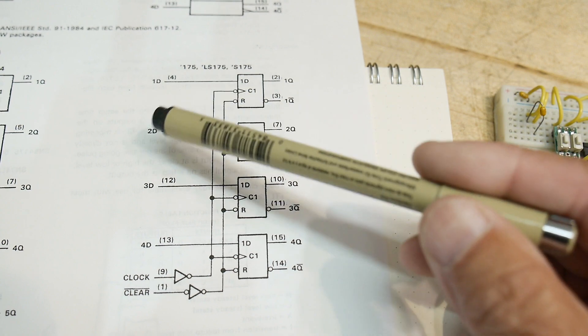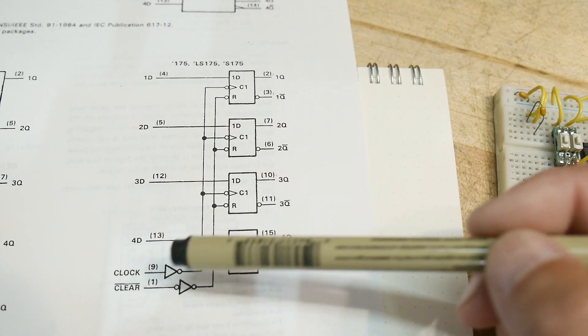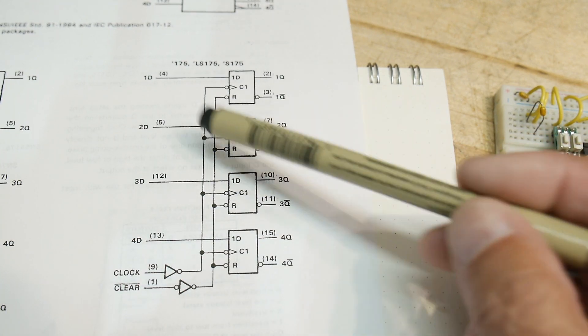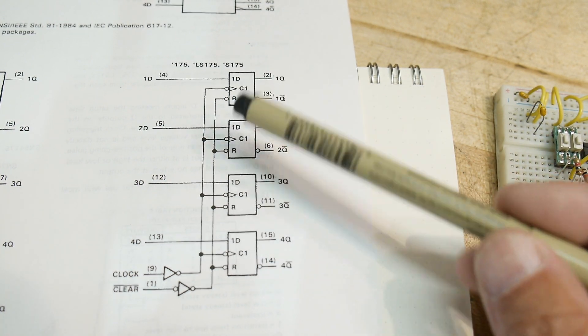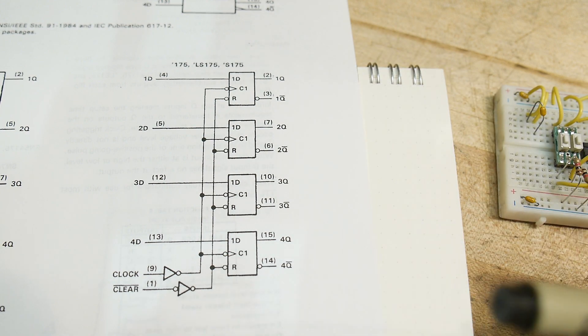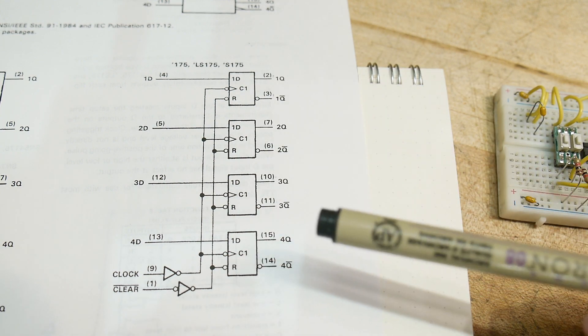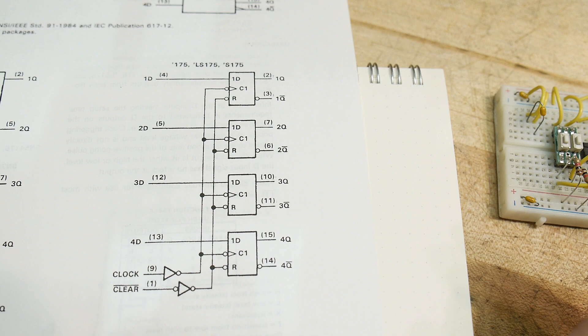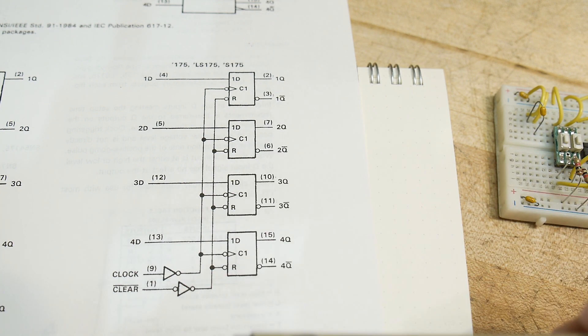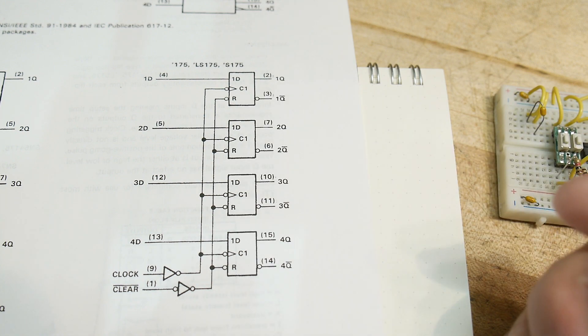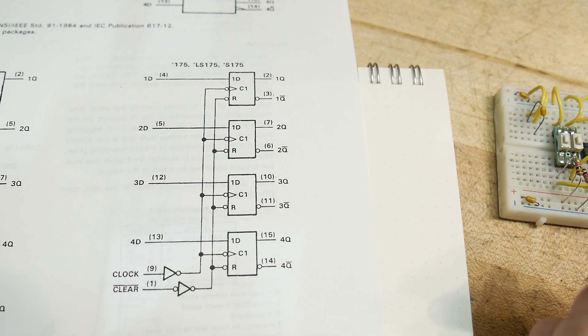So, if you had four bits of information, here are four bits of information, and you get a rising edge on the clock. Those four bits of information get transferred to the Qs. And so, it remembers them. As long as it doesn't clock any longer, those will be remembered all the time. If you wanted to clear everything, there is a clear function here, and it sets everybody to zero.